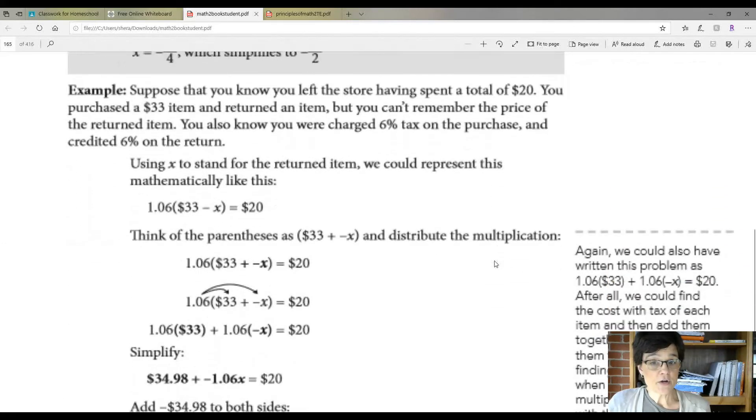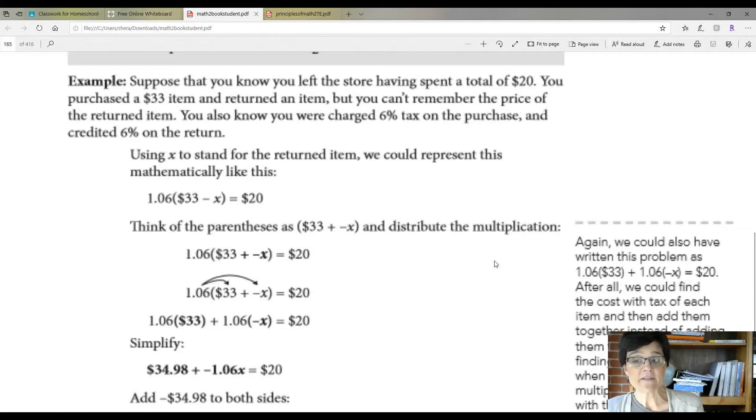Now suppose that you know that you left the store having spent a total of $20. You purchased a $33 item and returned an item, but you can't remember the price of the returned item. You also know that you were charged 6% tax on the purchase and credited 6% on the return. So using X to stand for the returned item, we could represent this mathematically like this. The tax times $33 minus what you took back equals what you spent.